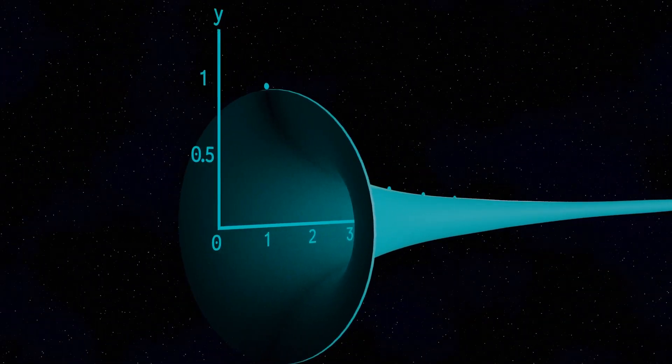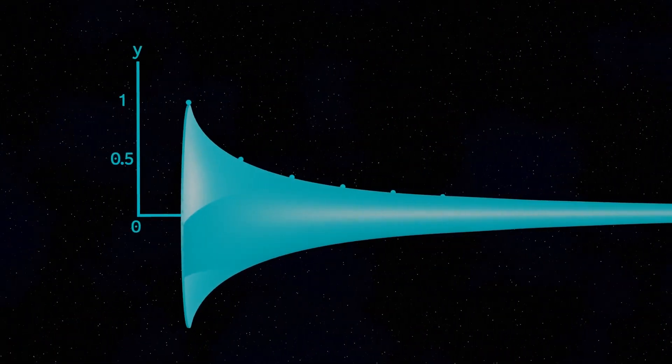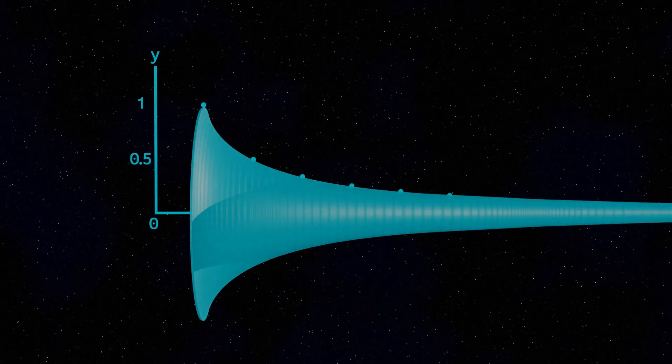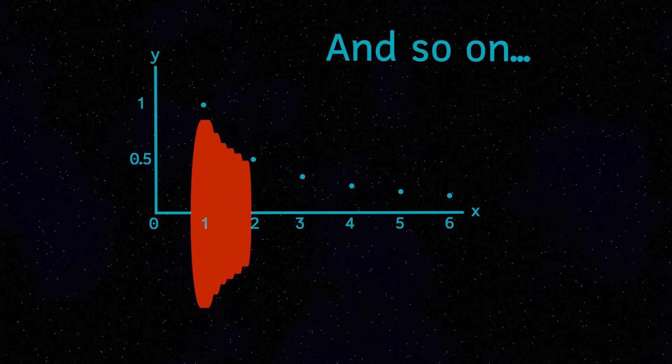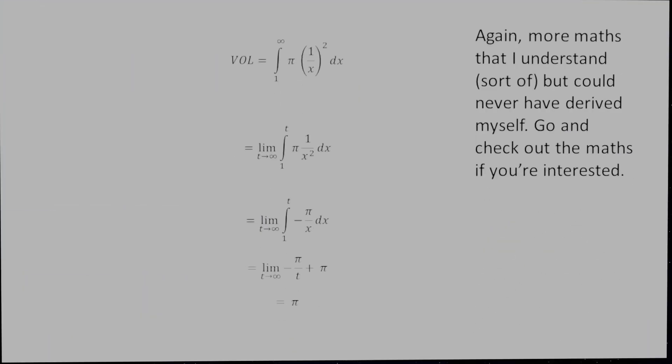So now on to the volume of this object. To calculate this, we can look at this object as a series of cylinders and then add up the volumes of all of the cylinders. And essentially, that's what we're doing when we do an integration, which we're going to perform to work this out. Again, there's some relatively clever maths here, which I will show you for those of you who are interested.